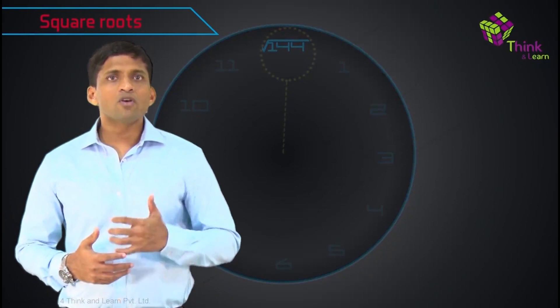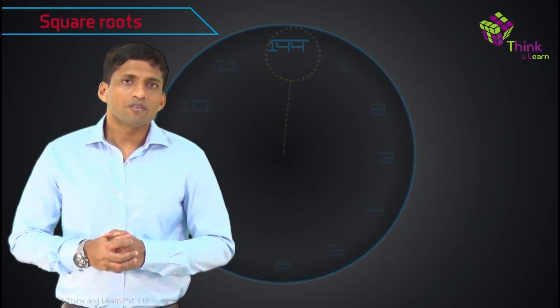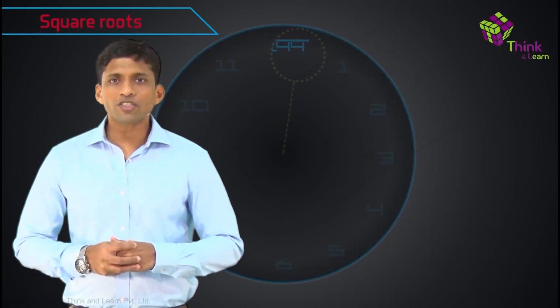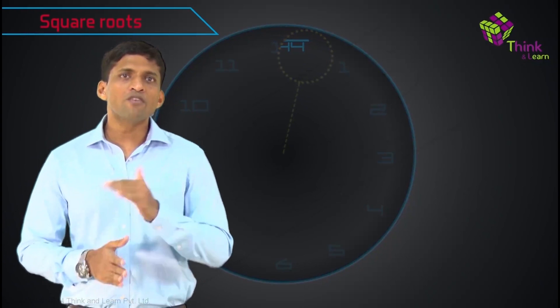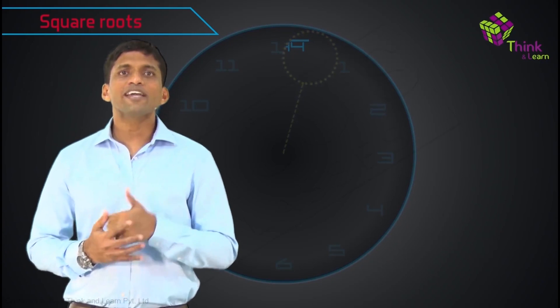Now we will discuss square roots. We have discussed everything about squares. Square root is actually the inverse operation of finding a square.